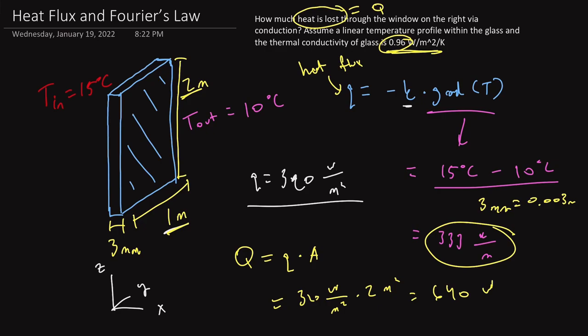And that is a fairly substantial amount of energy. Some microwaves operate on about 640 watts. So to just maintain the inside temperature of your house because of this window is requiring 640 watts be added into this system. That's the energy rate that is required. And so that is a lot.